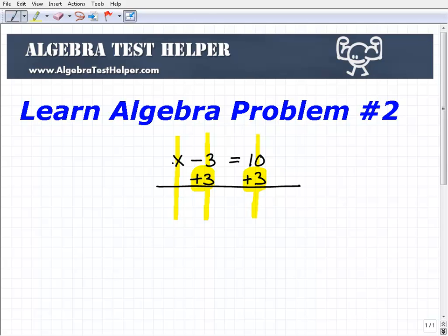So x minus 3 equals 10. To solve for x, I've got to add 3 to both sides of the equation. Now let's take a look at this first column. I have x plus nothing is simply x, minus 3 plus 3 is 0, so I'm not going to put anything there. And I have my equal sign, and I have 10 plus 3 is 13.